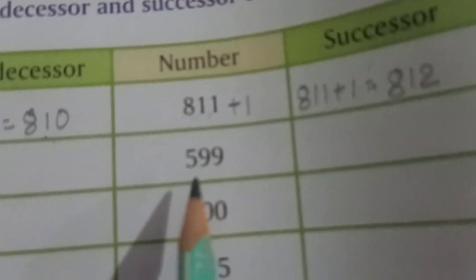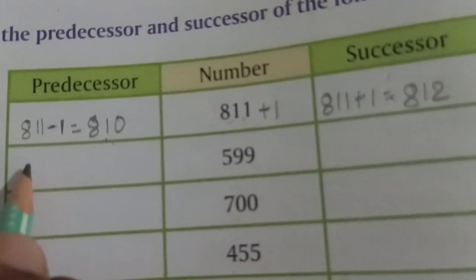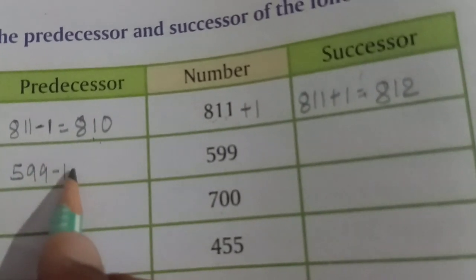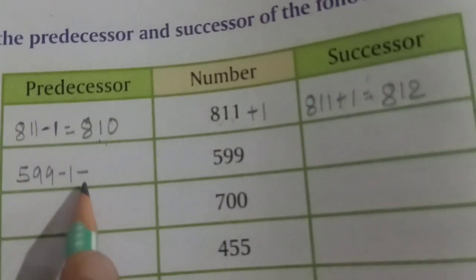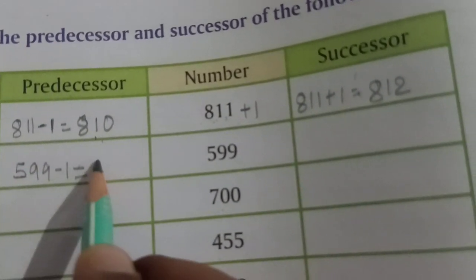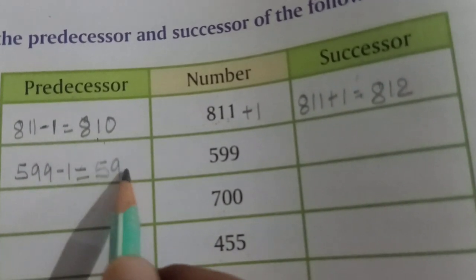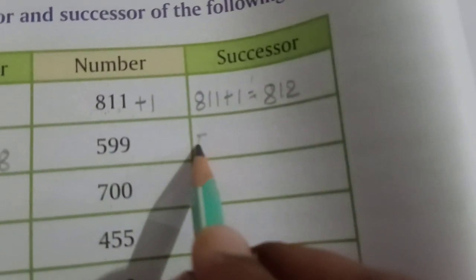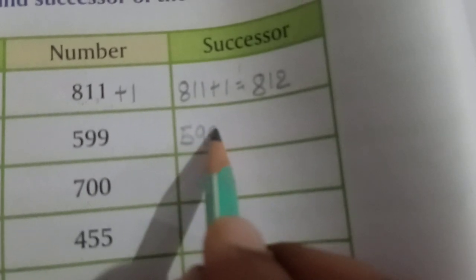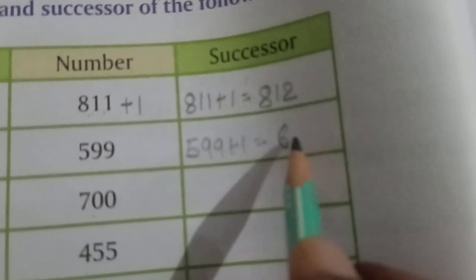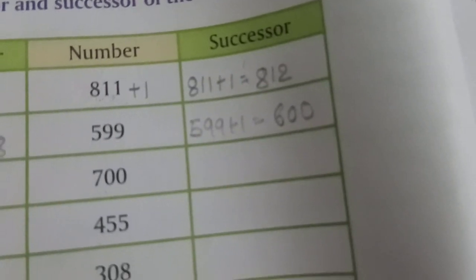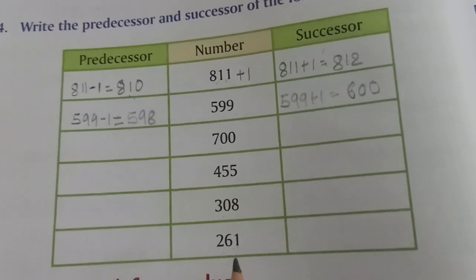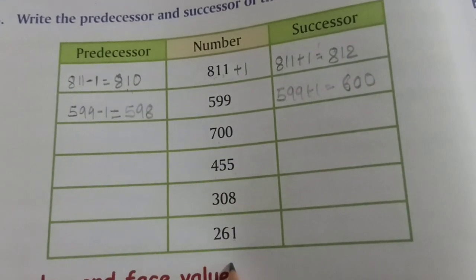Here 599: we subtract 1 from 599 and get 598 as the predecessor. And 599 plus 1 gives us 600 as the successor. I hope you all have understood. Do these questions by yourself.